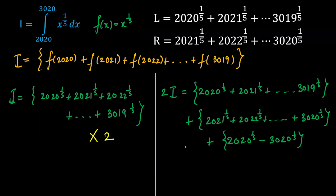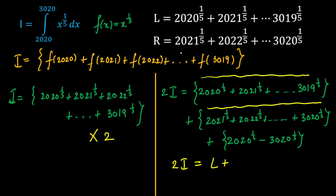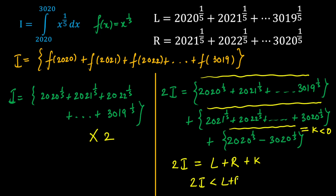Now K is the fifth root of 2020 minus the fifth root of 3020, which is negative since 3020 > 2020. So 2I = L + R + K, where K < 0. Therefore 2I is less than L + R, meaning L + R > 2I. That is our answer.